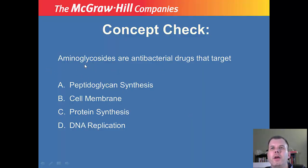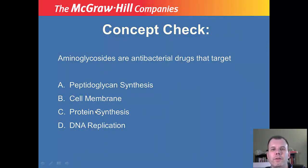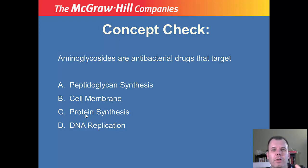Concept check: aminoglycosides are antibacterial drugs that target what - peptidoglycan synthesis, cell membranes, protein synthesis, or DNA replication? The key is to look at 'aminoglycoside' - think of amino acids. Aminoglycosides block protein synthesis. They target the 30S so mRNA can't be read and prevent protein synthesis. That's where they get the name aminoglycoside. So if you said protein synthesis, good job.